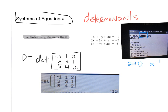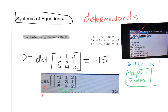Go into the matrix menu, enter in the determinant, then go into your alpha zoom matrix template and enter in this 3×3 matrix — that gives you your D value. Cramer's Rule only works when D is not equal to 0, and here our D turned out to be -15. So we can proceed with Cramer's Rule because our D value is not 0.